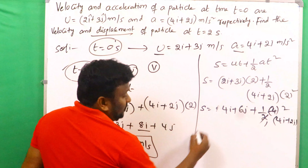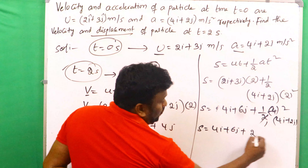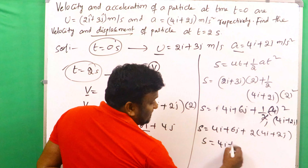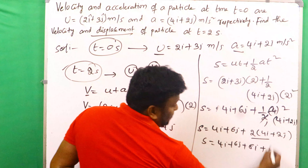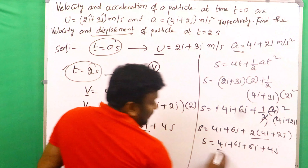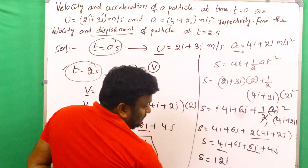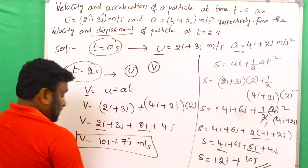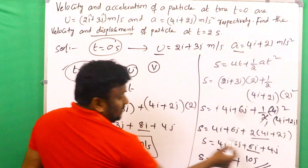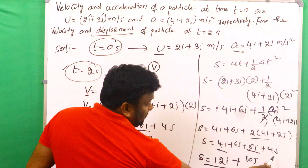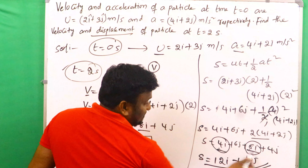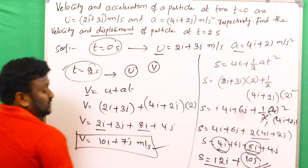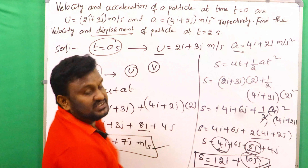Calculating: s equals 4i plus 6j plus half of 4 into 4i plus 2j, which gives 4i plus 6j plus 2 times 4i plus 2j, equals 4i plus 6j plus 8i plus 4j. Combining: 4i plus 8i equals 12i, and 6j plus 4j equals 10j. So displacement s equals 12i plus 10j. This is the velocity and displacement at time t equals 2 seconds.